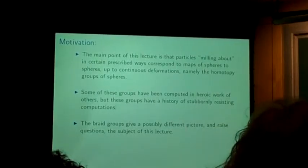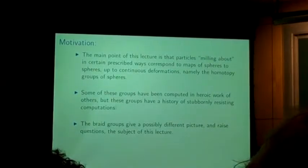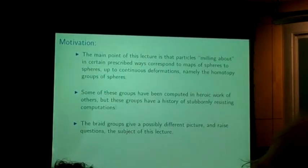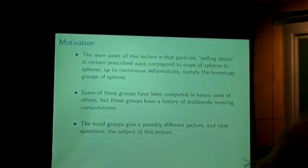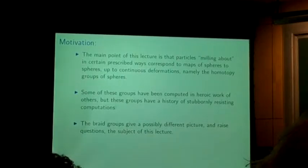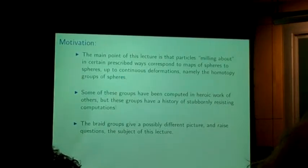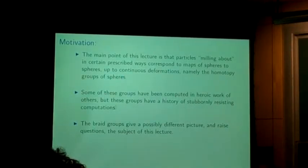The main point of this lecture is that keeping track of particles milling about through time in the plane corresponds to giving maps between spheres of varying dimensions, and then considering those maps up to continuous deformations. That's an object that people have studied off and on for over a hundred years — in fact, it goes back before that to some work of Poincaré. The braid groups give a possibly different picture of what homotopy groups look like.